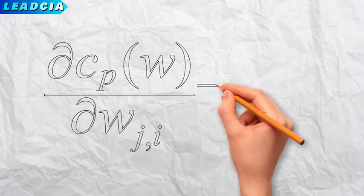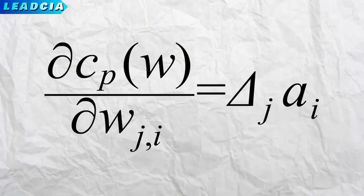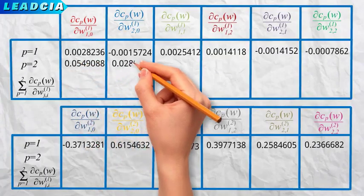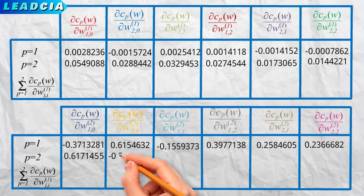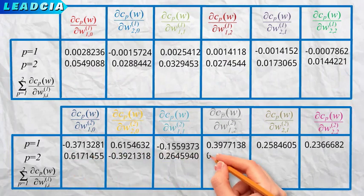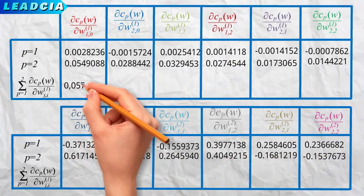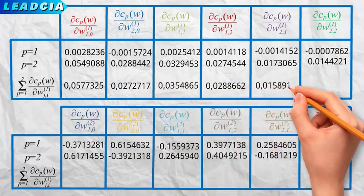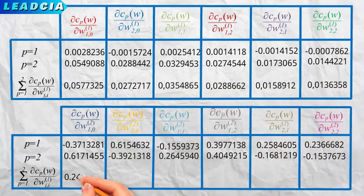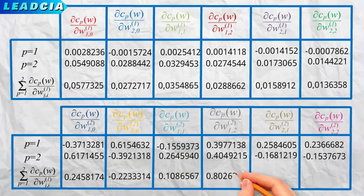By applying the formula for calculating the stochastic gradient with respect to an omega j i, we multiply the delta j by the a i. We return to the table where we saved the stochastic gradients of the first example and add those of the second example. Once we have finished, we can calculate the sum of the stochastic gradients of the cost function c with respect to each omega for all the examples.